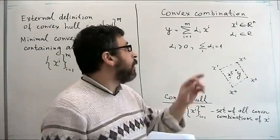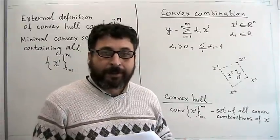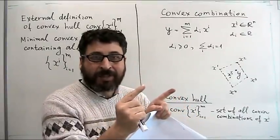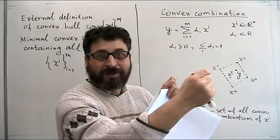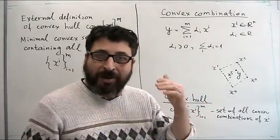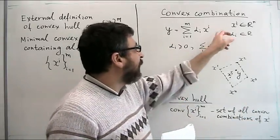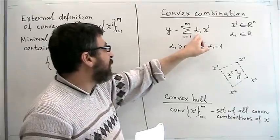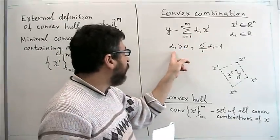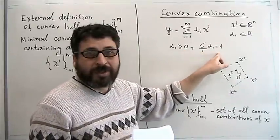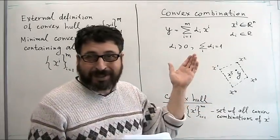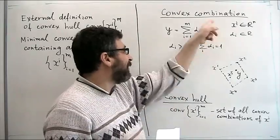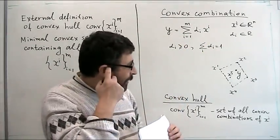One more notion is a convex combination of a set of points. When we defined convex sets and functions, we used a convex combination of two points — the interval of a straight line connecting them. Now we generalize: if we have a set of points in ℝⁿ, a convex combination is a weighted sum with coefficients greater or equal to zero whose sum equals one. With two points, it was alpha·x + (1 minus alpha)·y, which is a particular case.